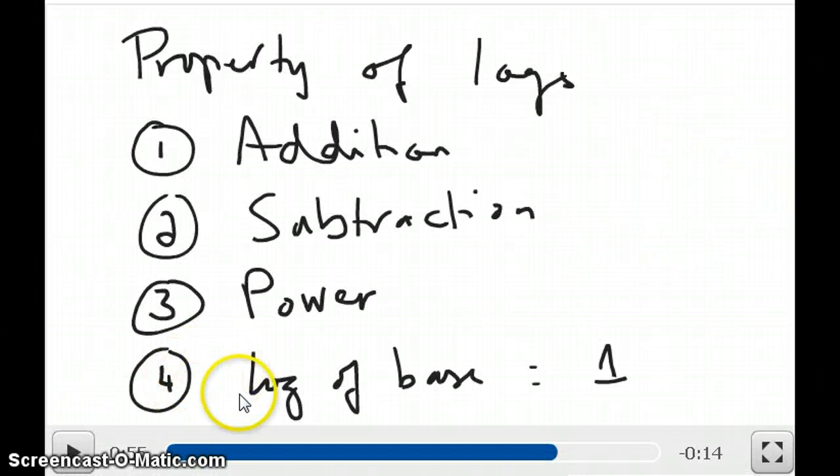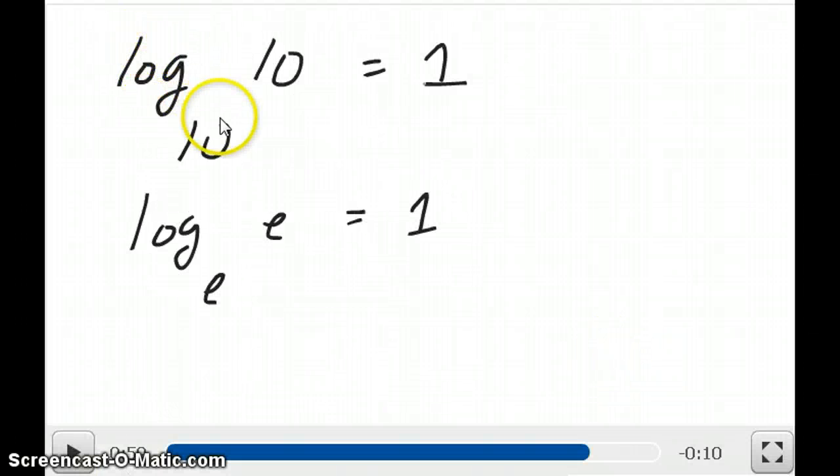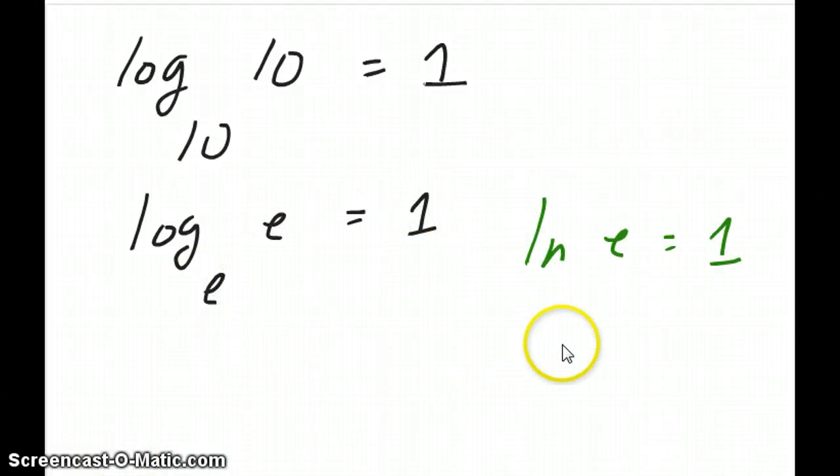The last component I want to mention, or the last property, is just if you were to have the same number in your base and your argument, then your exponent has to be 1. This should be fairly easy to see. So if the log of 10, of base 10, has to be 1, because 10 to the power of 1 is equal to 10. The log of e with base e is also equal to 1, because e to the 1 is equal to e. Of course, what that means is that the ln of e is equal to 1.